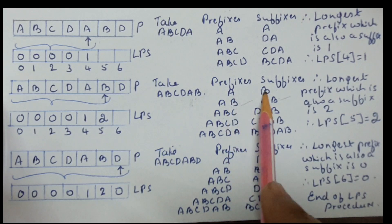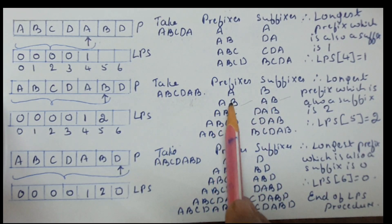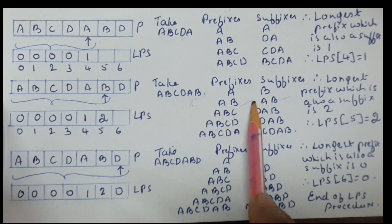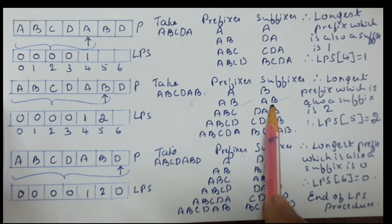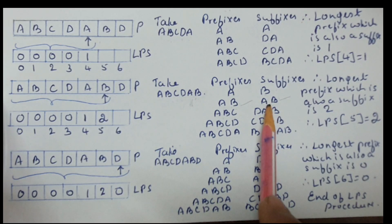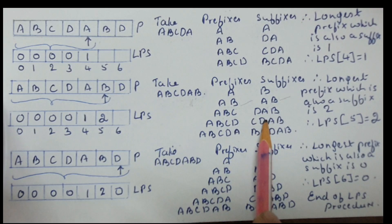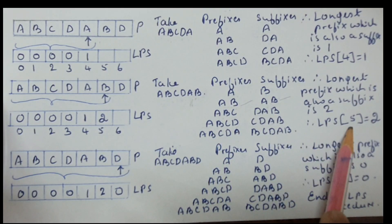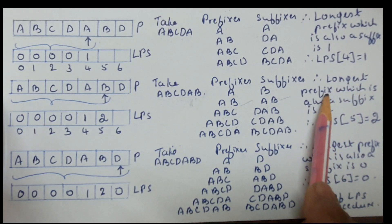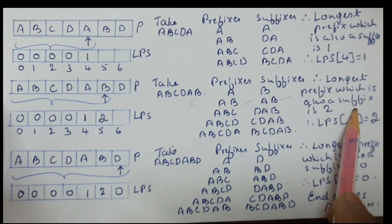If there are multiple prefix-suffix matches — for example, prefix A matching suffix A (length 1) and prefix AB matching suffix AB (length 2) — we take the longest match. So in such cases, 2 is the longest and that length is taken. That is the meaning of 'longest prefix which is also suffix.'